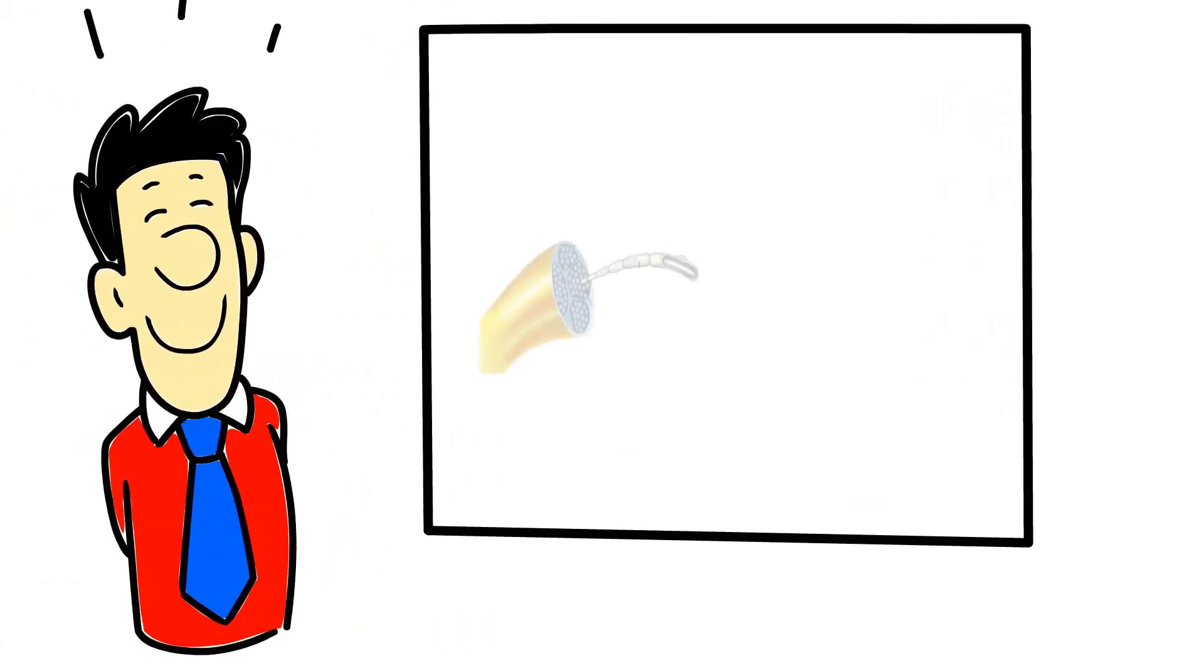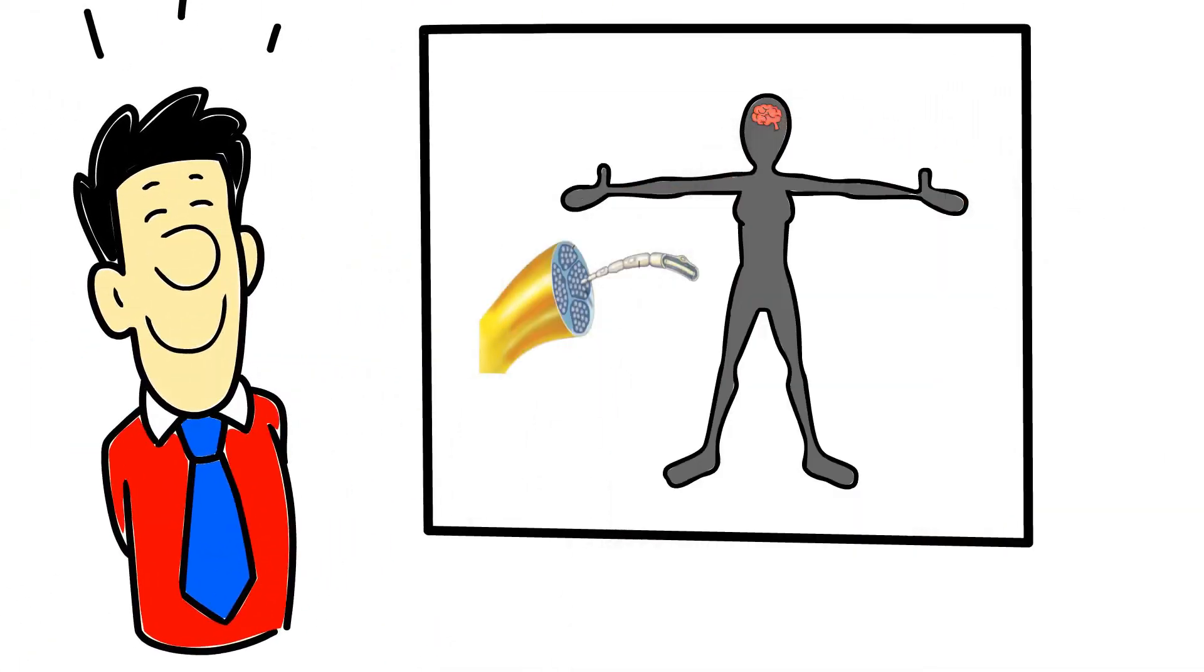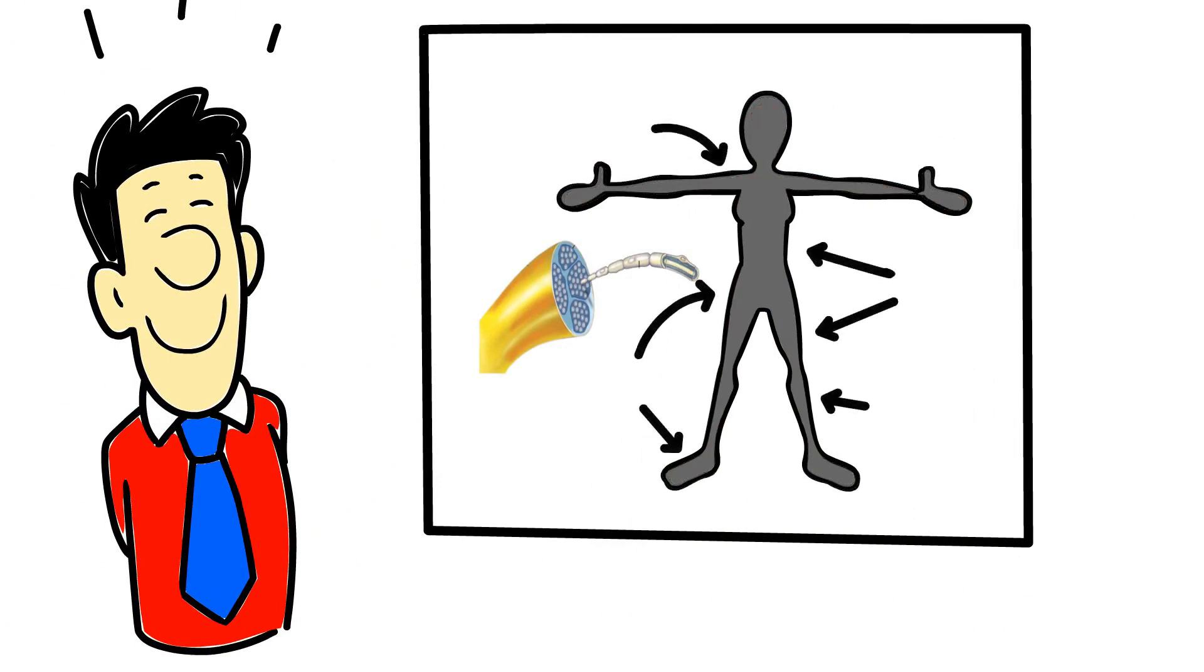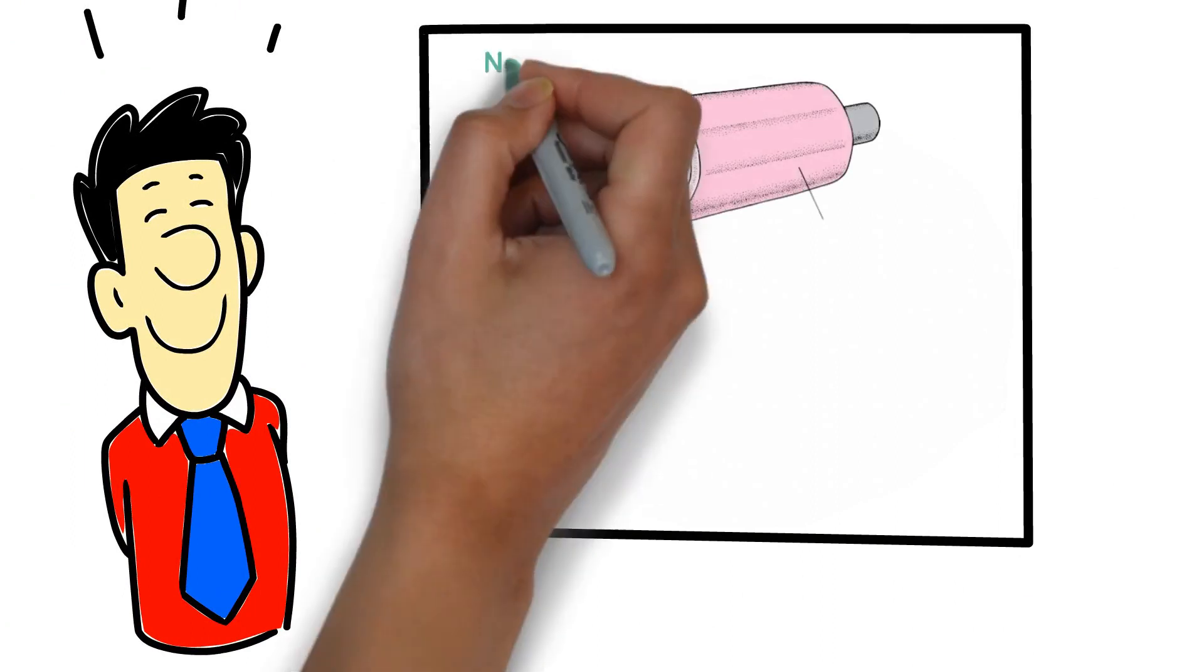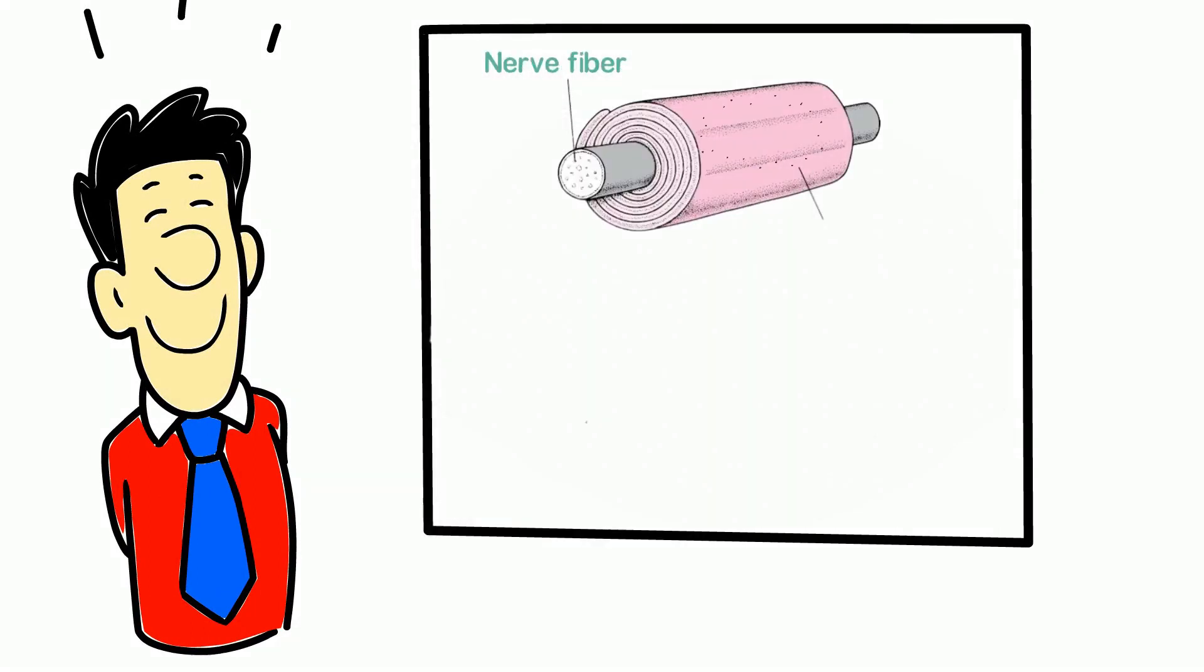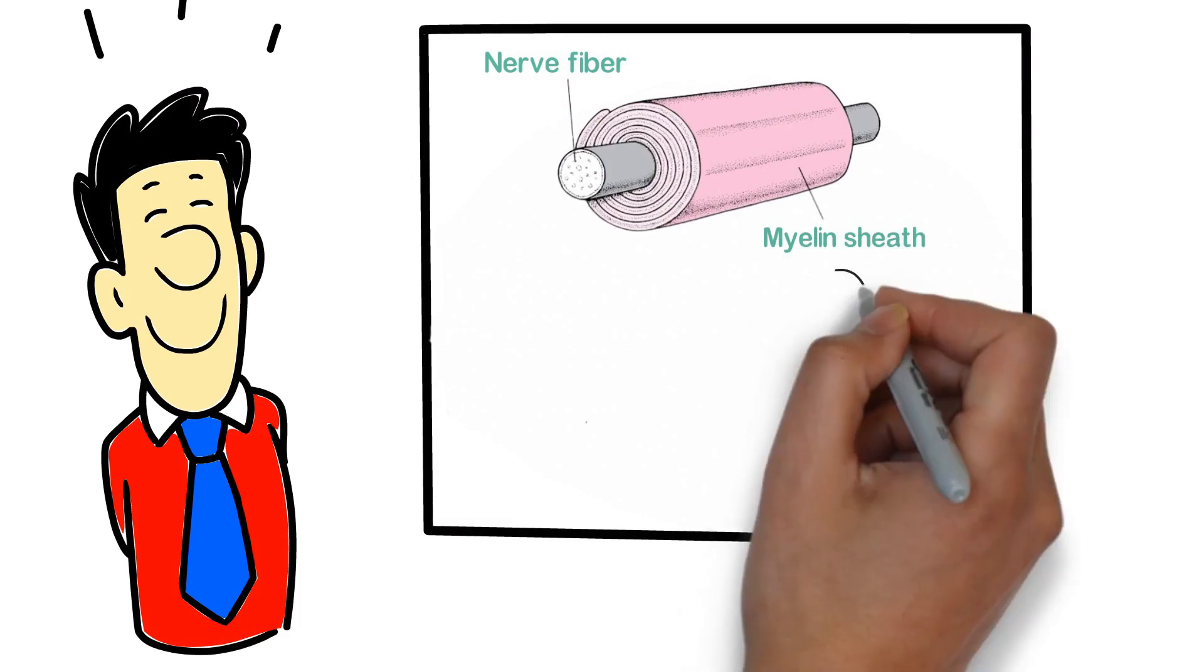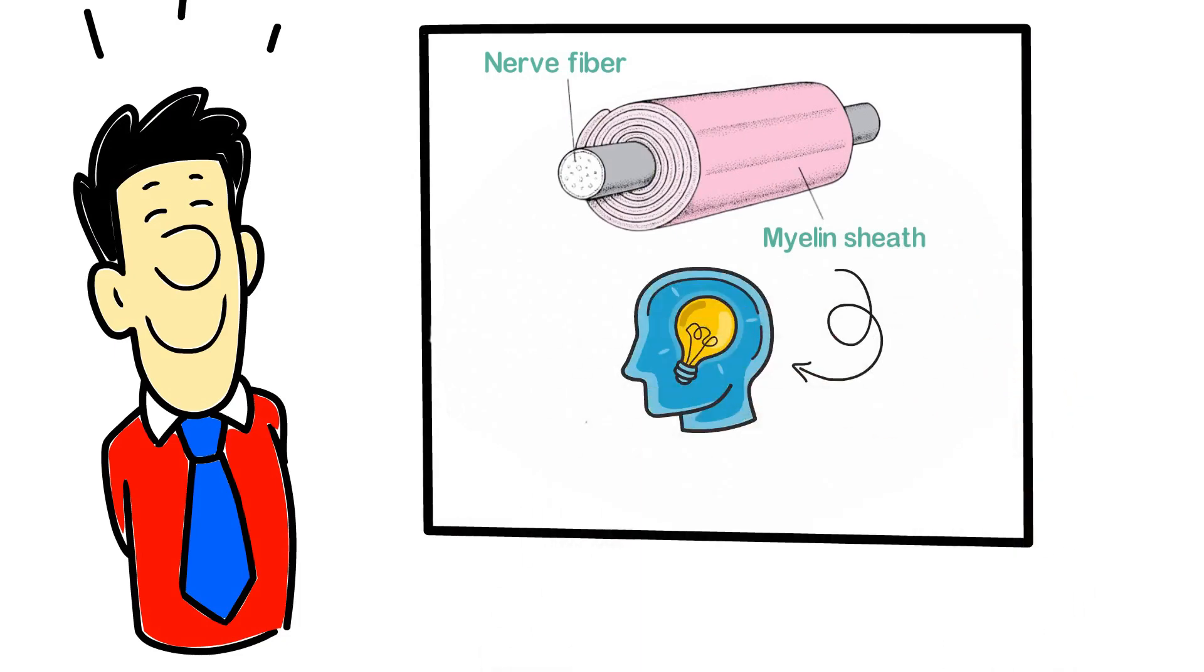We have thousands of nerve fibers that carry information from your brain to different areas of the body. These act like electrical cables. Each nerve fiber is surrounded by a protective sheath called the myelin sheath. The purpose of the myelin sheath is to help carry information from one area to the other more efficiently.